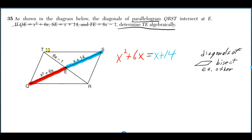The diagonals of a parallelogram bisect each other, so we know this diagonal cuts the other diagonal into two equal halves, the red and blue. Therefore, X squared plus 6X is equal to X plus 14.